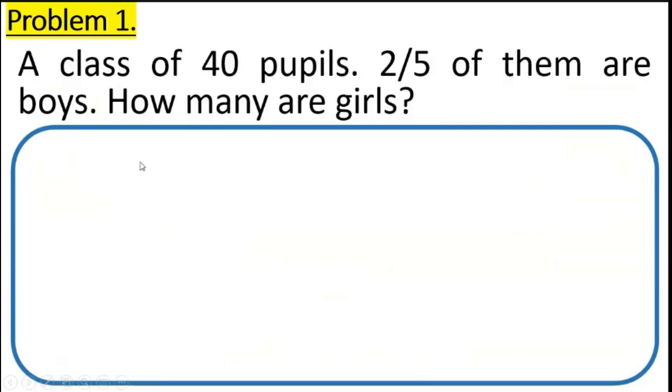Now, I'll show you how to solve problem number one. The problem is: a class of 40 pupils, two-fifths of them are boys, how many are girls? As you can see in this problem, we have 40 pupils. This 40 pupils is the total number of pupils. Let's find out first, what is the first step?